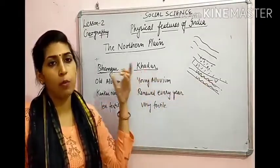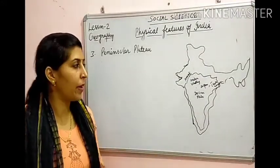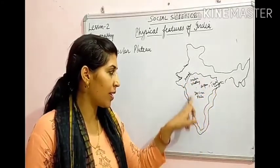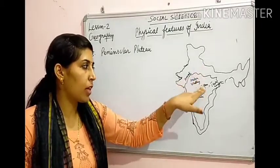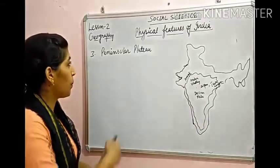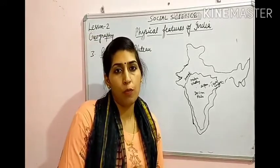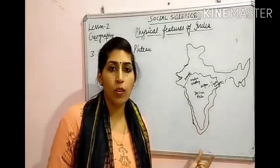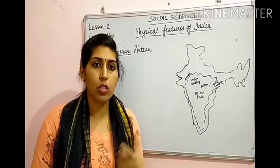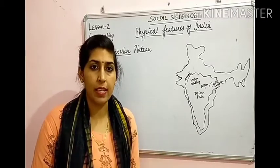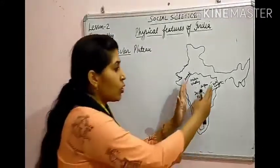The third physical feature of India is the Peninsular Plateau. यह Northern Plain के south में है। Peninsula का मतलब है — the area that is covered by water from three sides. अगर कोई piece of land चारों तरफ से water से surrounded हो तो उसे island कहते हैं, और जो three sides से water से surrounded हो उसे peninsula कहते हैं।